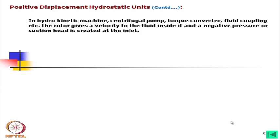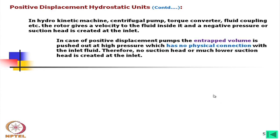In hydro-kinetic machines — centrifugal pumps, torque converters, fluid couplings — the rotor gives velocity to the fluid, creating suction head at the inlet. In positive displacement pumps, the entrapped volume is pushed out at high pressure with no physical connection to the inlet fluid, so no suction head or much lower suction head is created at the inlet.